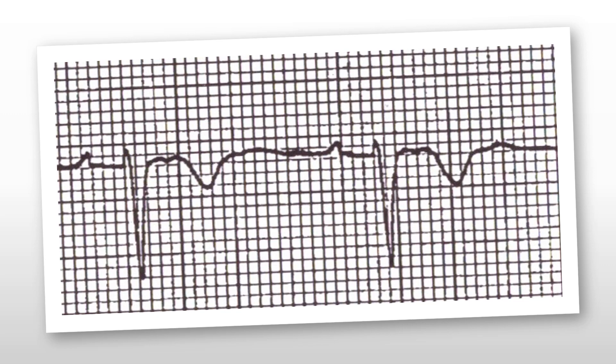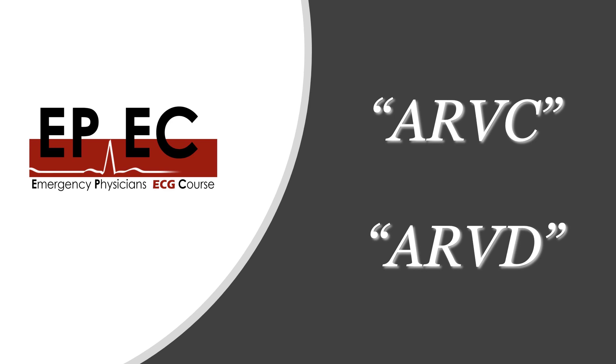Moving on, in V1 to V3 — especially V2 — there is a weird-looking notch at the end of the QRS complex and the beginning of the ST segment. This is the second abnormality. Combining both abnormalities together leaves us with only one diagnosis: ARVC or ARVD — arrhythmogenic right ventricular cardiomyopathy, also known as arrhythmogenic right ventricular dysplasia.